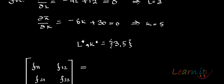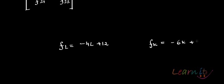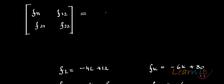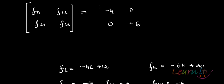Let me write the two first order conditions again. Del π by del L is minus 4L plus 12, and del π by del K is minus 6K plus 30. So FLL is minus 4, FLK is 0, FKK is minus 6, and FKL is 0. You will just substitute these values, which gives the Hessian matrix as minus 4, 0, 0, minus 6.